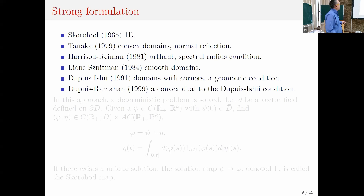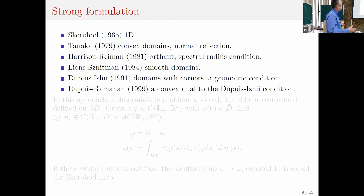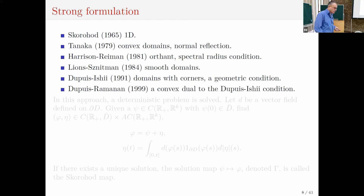I'll start by the strong formulation, following the ideas of strong solutions to stochastic differential equations. This started with Skorokhod in dimension one, Tanaka for convex Euclidean domains, Harrison and Reiman for the orthant with a certain spectral radius condition, and Lions-Sznitman for general Euclidean domains with smooth boundary and oblique reflection. Then a paper by Dupuis and Ishii analyzed a geometric condition sufficient for existence and uniqueness of the strong formulation, which extends, in a special case of the orthant, the condition of Harrison and Reiman.